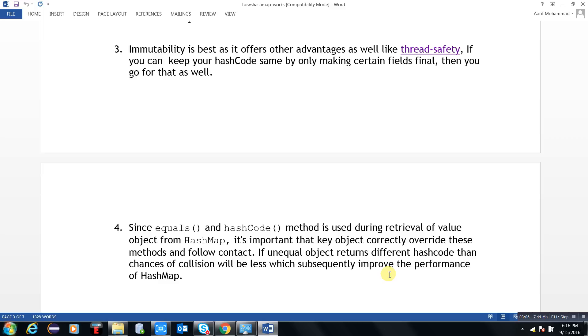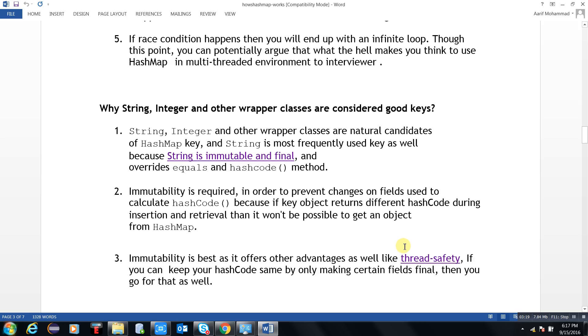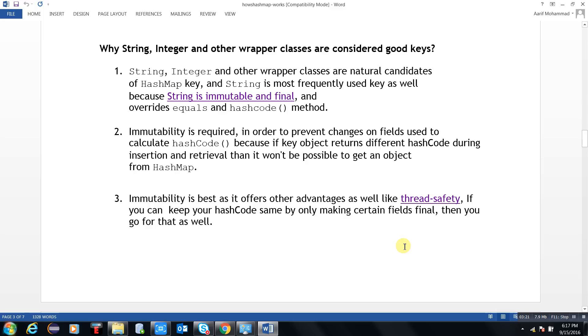That means if unequal objects return different hashCodes, not the same hashCode, then there will not be any collision chance. So it is the best approach to utilize String or Integer as wrapper classes as the keys to HashMap.